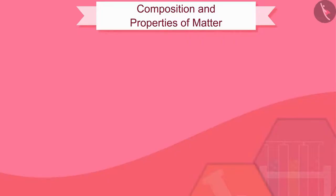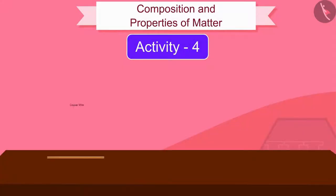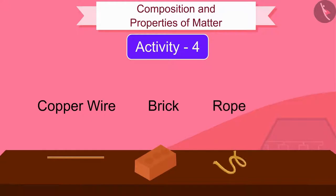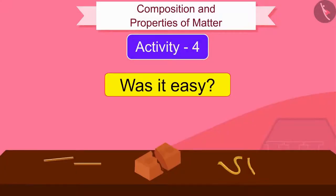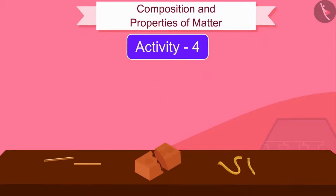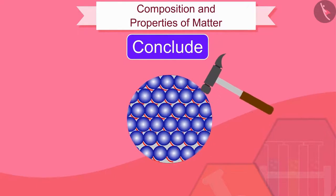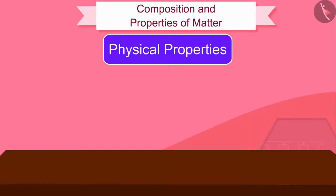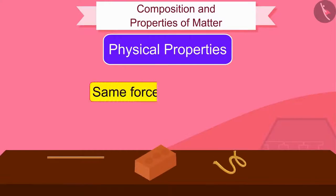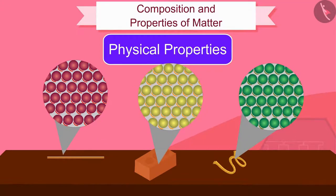Let us now discuss the last characteristic feature of particles. Take a copper wire, a piece of brick and a rope. Try to make them brittle by hammering, cutting or pulling them. It is not easy because a force acts between the particles of matter that holds them together — particles of matter attract each other. All three objects do not require the same force to break them because the strength of the attraction force between particles varies in each matter.